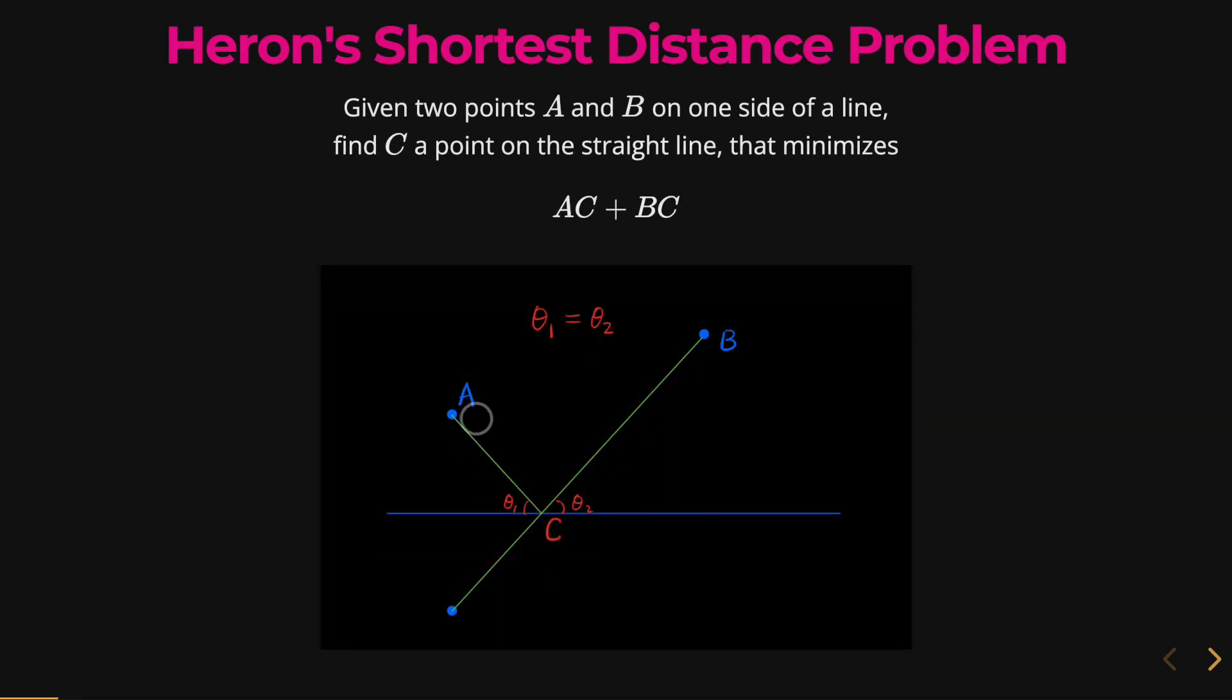And if we were to reflect A, point A, to become A', we would have created a new angle here as we have reflected it. And all three of these angles, theta1, theta2, and the new angle, they are all equal to each other.